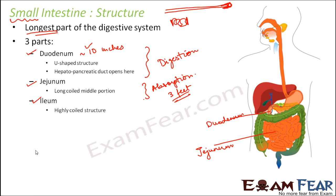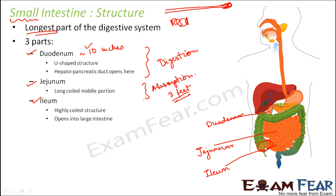The terminal part of the small intestine is the ileum, which is a highly coiled structure and the final section of the small intestine. After this it opens into the large intestine — the green colored structure seen here is the large intestine, and the small intestine meets it through the ileum section. So to summarize: digestion happens in the duodenum, partial absorption happens in the jejunum, and in the ileum the leftover absorption gets completed, so complete absorption takes place in the ileum.